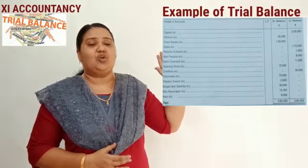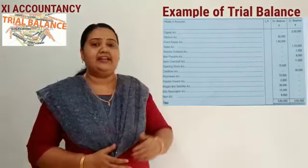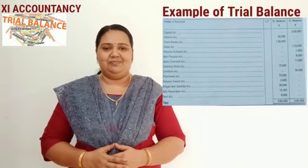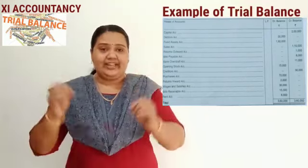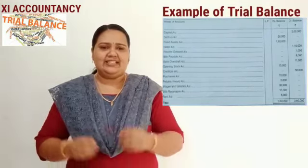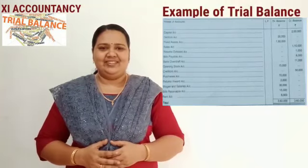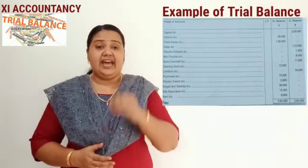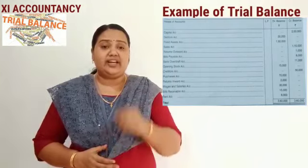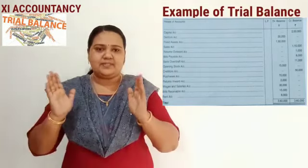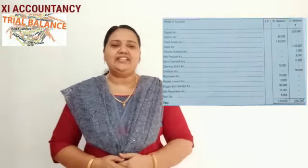The total of the debit balance column and the total of the credit balance column will be equal. If they are not equal, we can assume that something went wrong — we can realize that the mathematical accuracy of accounts is not fulfilled if both columns are not equal. I think now you have got an idea about trial balance and its preparation. More examples we will solve in the live session. Thanks to all.